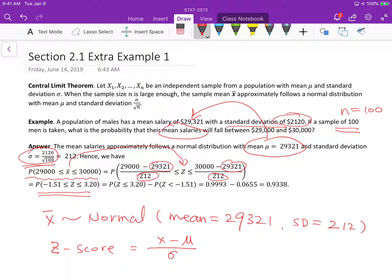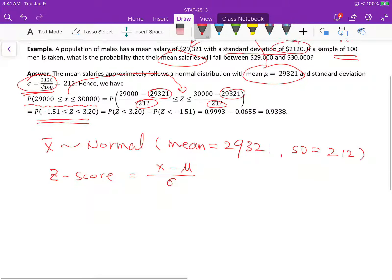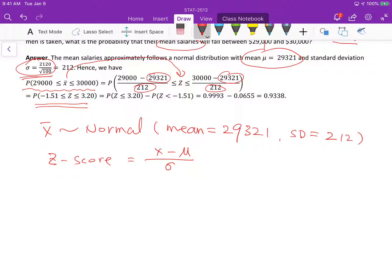So we just want to know z falls between negative 1.51 and 3.2. If we want to know the probability that, so this is negative 1.51, this is 3.2. If we want to know the probability in this area, we can calculate